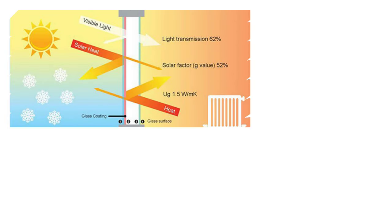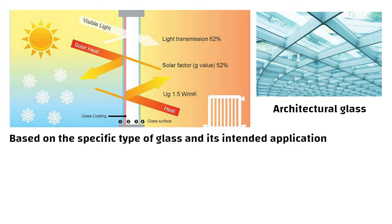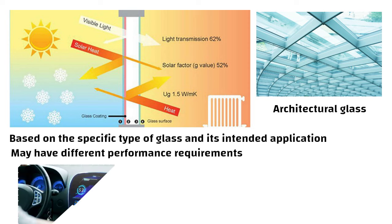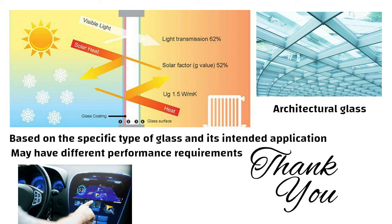These parameters can vary based on the specific type of glass and its intended application. For example, architectural glass for windows may have different performance requirements than glass used in electronic displays or automotive applications. So friends, see you in the next video. Thanks for watching.